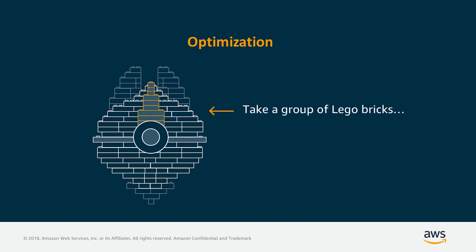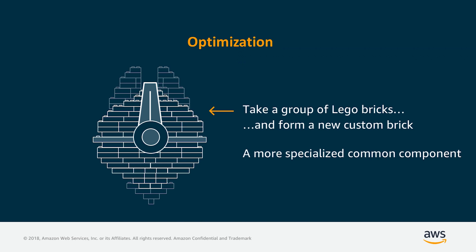Then the other thing you can do is optimize it. Spaceships are supposed to have pointy bits on the front, and it's hard to make that with LEGO bricks. So you'd take some of the LEGO bricks and replace them with a custom brick that is exactly the right shape. If you look at the way LEGO works in real LEGO kits, they're starting to build more and more of these little custom bricks that add the things you need to make it look more like what they were trying to model. So what we're really doing here is building a more specialized common component that we might use in several places, but which doesn't fit the standard format of whatever the bricks are.